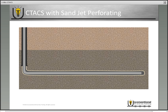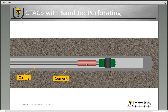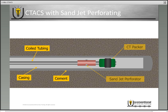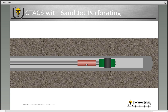Now let's zoom into the toe of the well. We have our casing and our cement providing isolation, and you go ahead and run your coil tubing into the wellbore with the bottom hole assembly consisting of a sandjet perforator and a coil tubing packer. Once you're ready to begin your frack job, go ahead and set your coil tubing packer — that'll isolate from anything below you. You pump a mixture of fluid and sand through your coil tubing and out of your sandjet perforator, which perforates through the casing and through the cement, giving you the access point you need to pump into the formation.